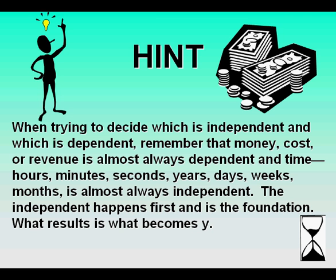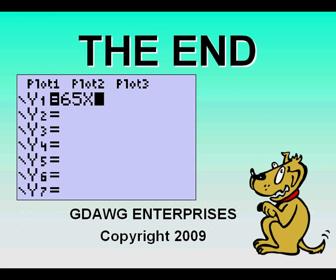As a final hint: when deciding which quantity is independent and which is dependent, remember that money, cost, or revenue is almost always dependent. Time — hours, minutes, seconds, years, days, weeks, months — is almost always independent. The independent happens first and is the foundation; what results from it becomes the dependent quantity. I hope this video has been helpful and enjoyable to you. Thank you.